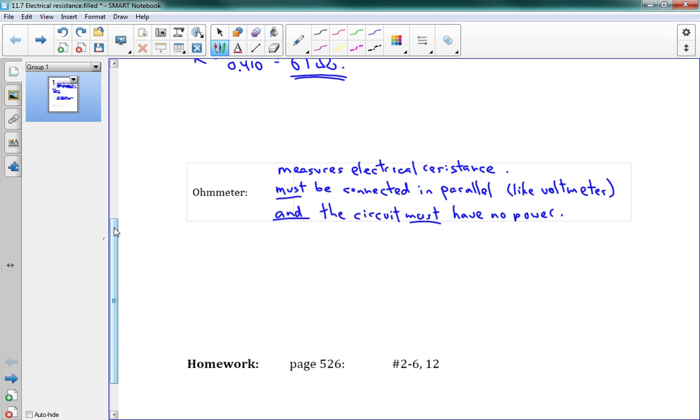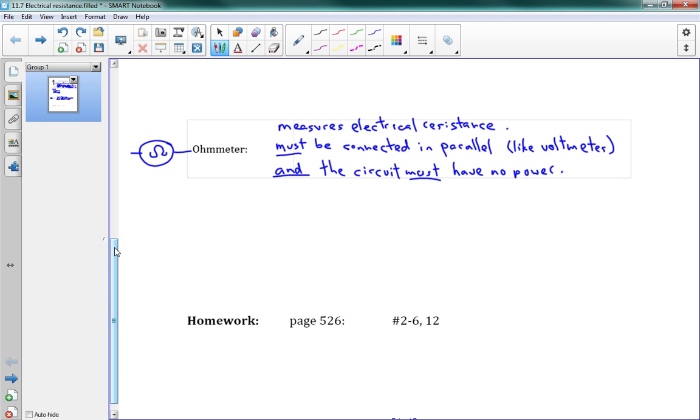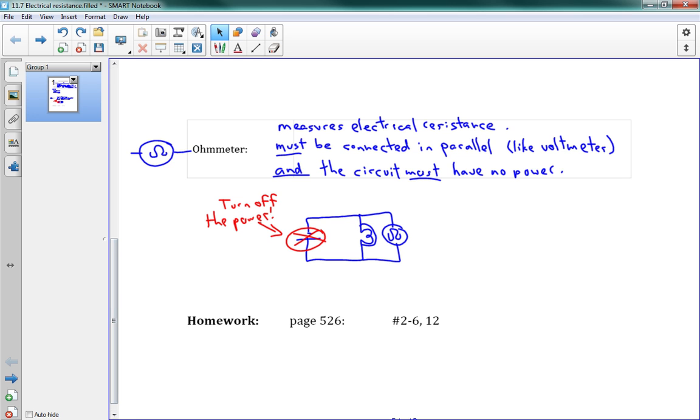Ohmmeters look like the other two - you just put a circle with the omega sign. I'll show you a quick example of how to use it in a real circuit. We've got our bulb here. Here's our bulb, here's our ohmmeter. Is this good? No, it's not good because that power is going to screw things up. So I'm circling this and putting an X. We need to turn off the power. That is how you connect an ohmmeter. That's it. I hope you enjoy the problems.